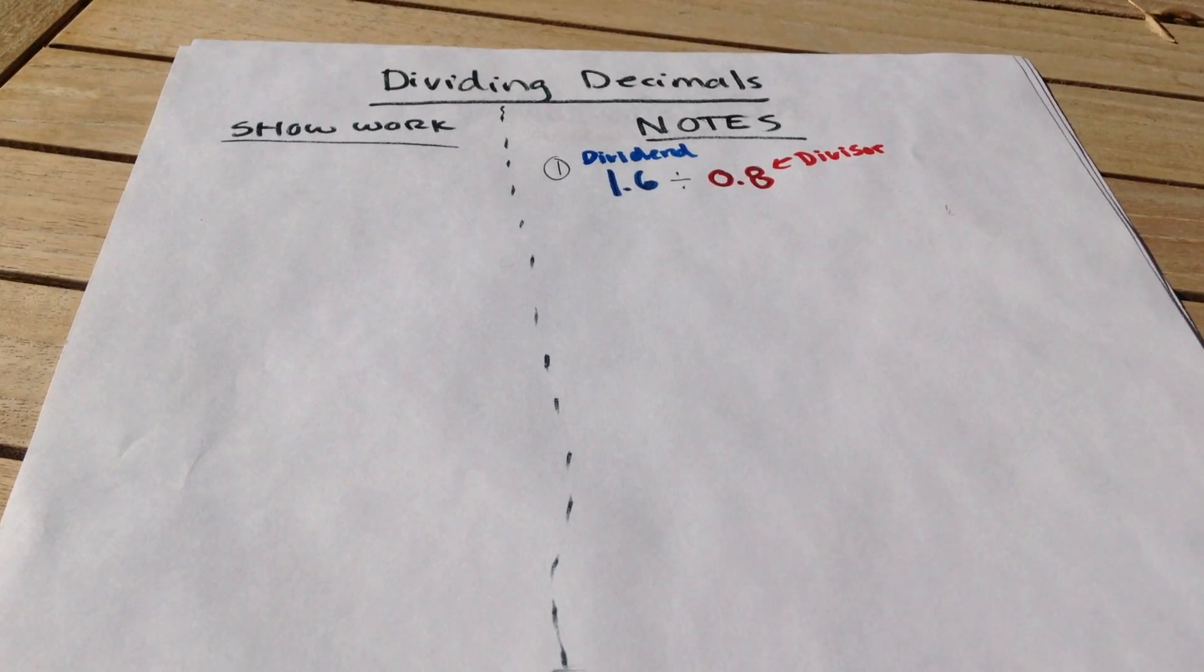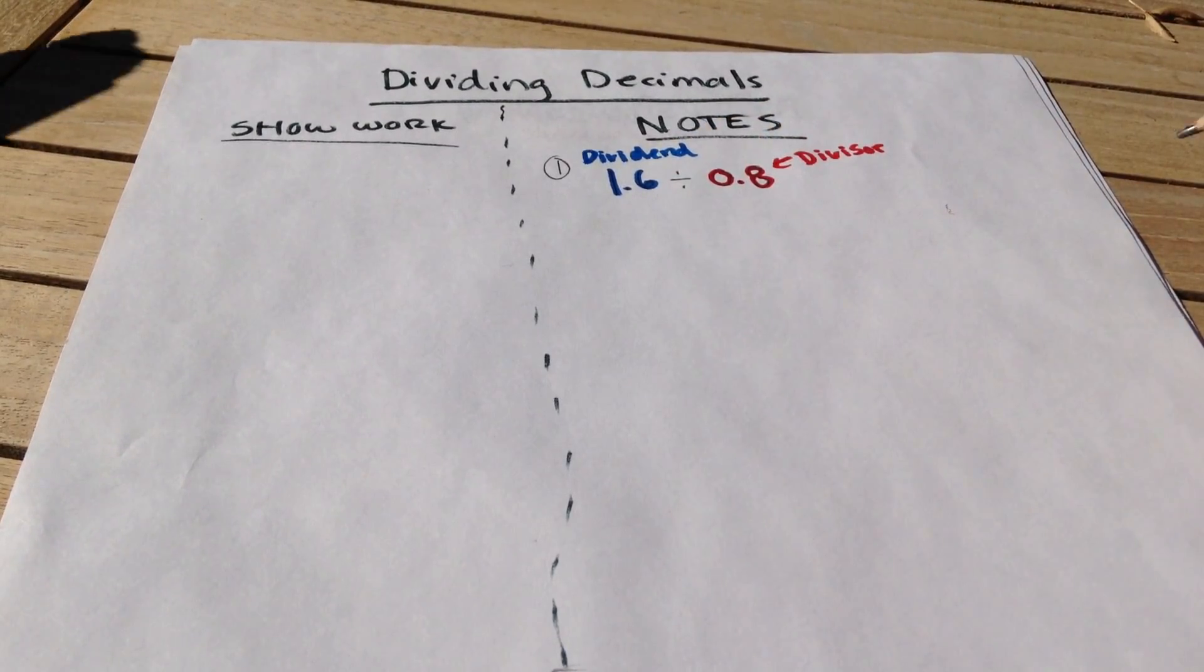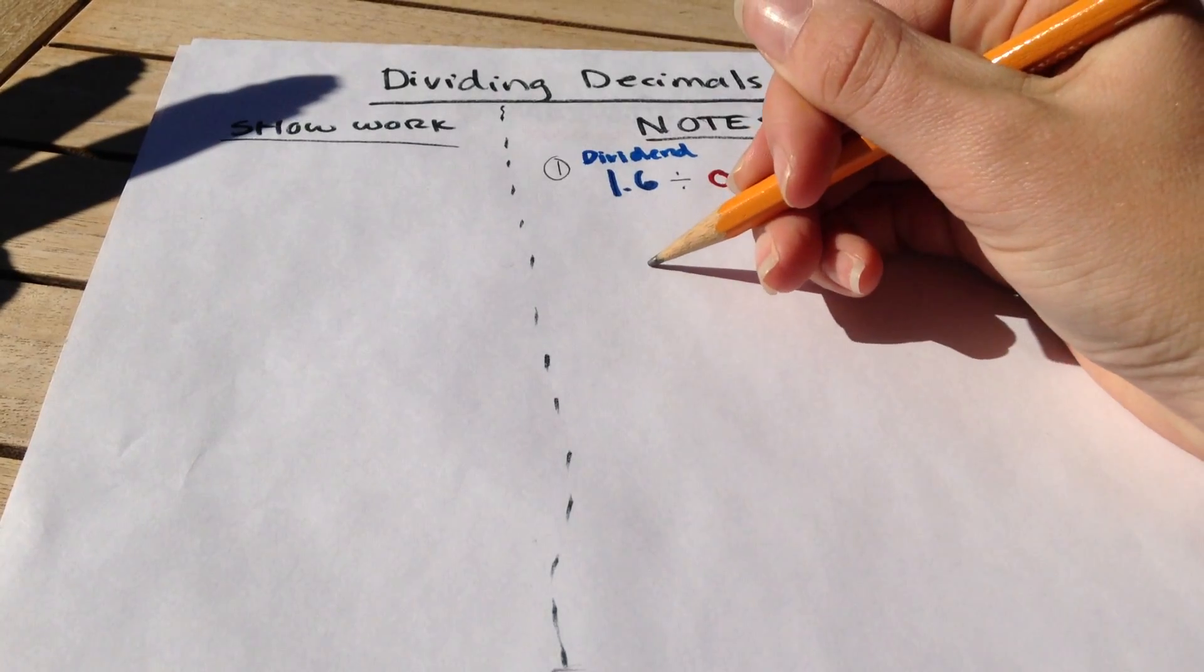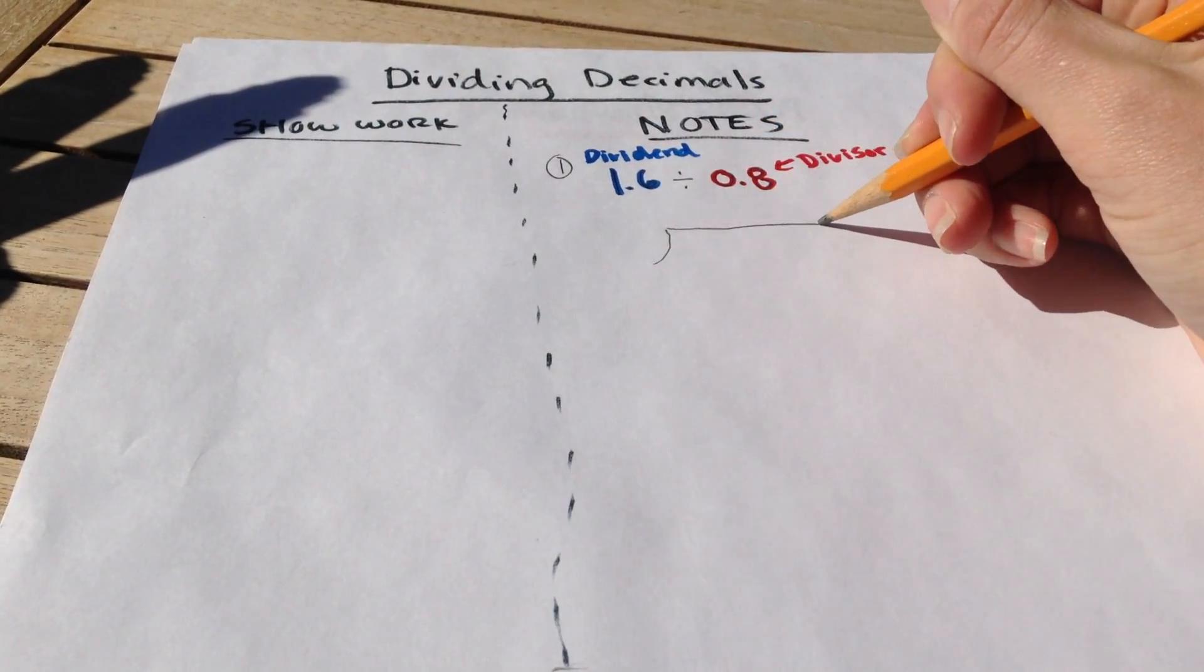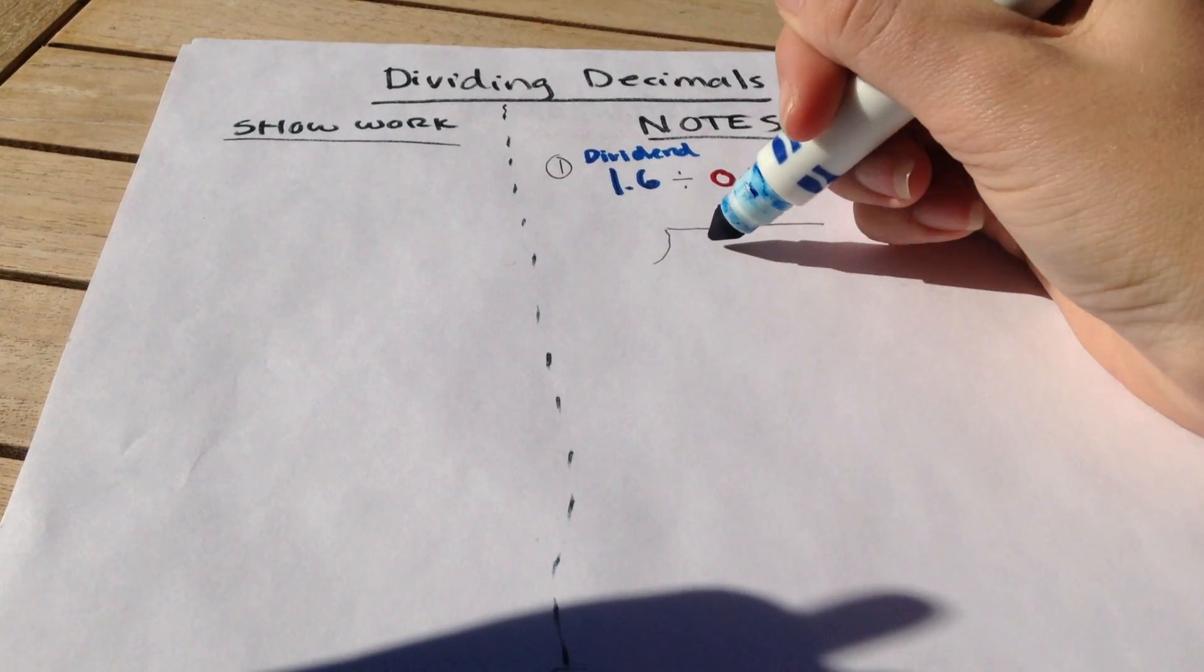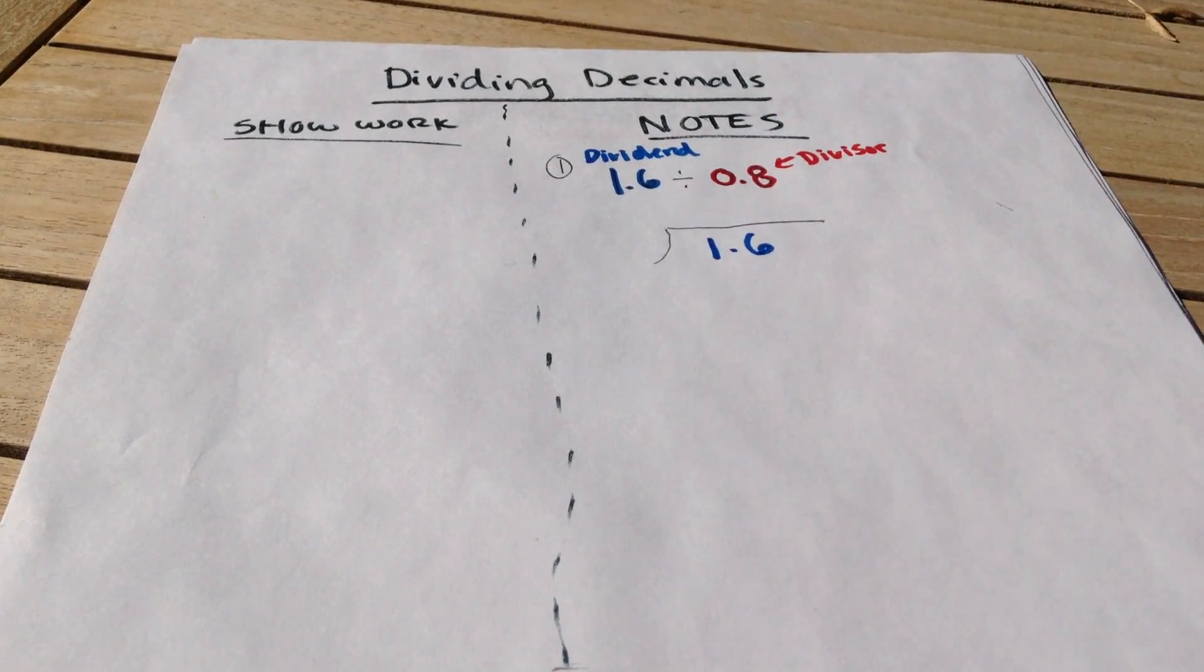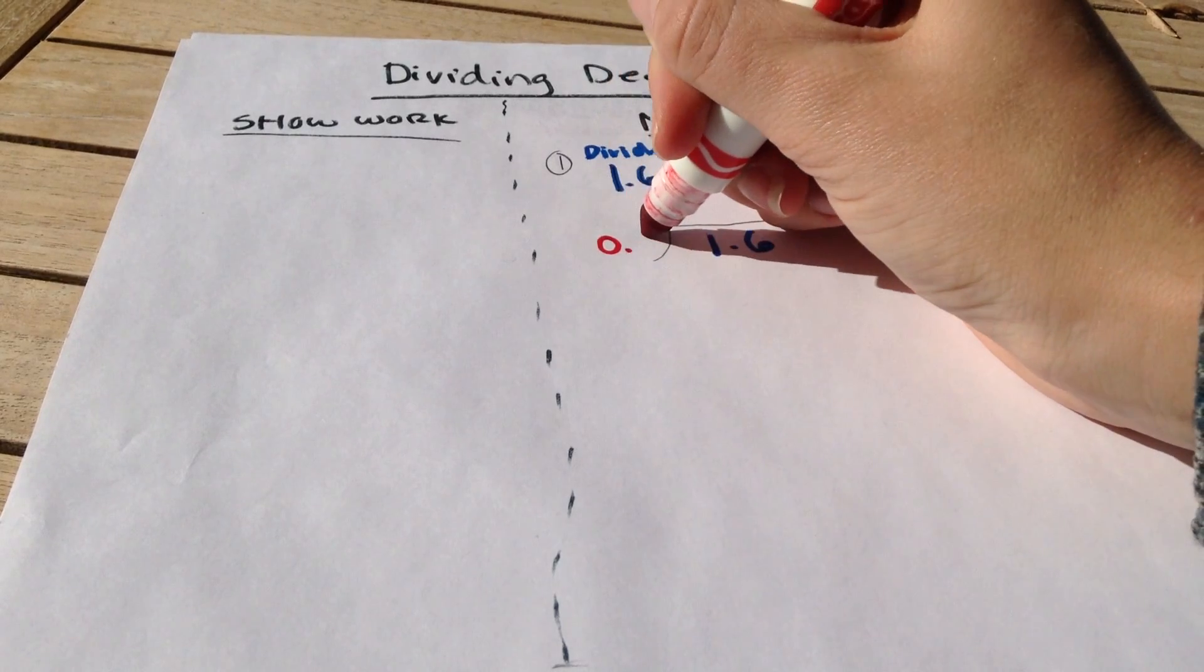So when I'm talking about my 1.6 divided by my 0.8, if I want to write that using long division, I know that my dividend, 1.6, goes inside, and my divisor, 0.8, goes on the outside.